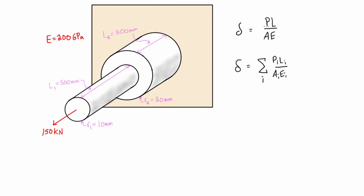Any time there's a change in cross-sectional area, as we have in this problem, or a change in the internal force, or even a mixing of materials — like if one section is steel and another is brass — they'll have a different modulus of elasticity, and we just solve by parts.